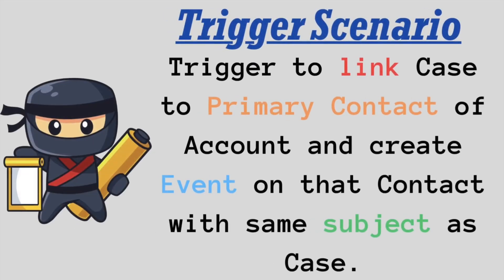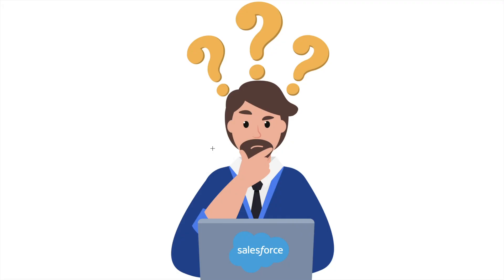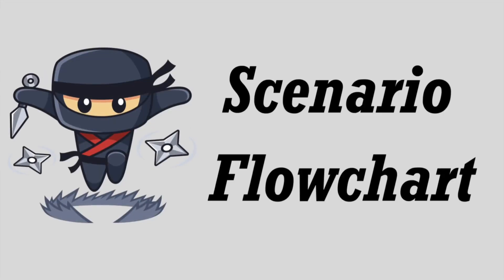Now let's understand what exactly we are going to do today. On insertion of a Case record, we need to link that record to the primary contact of the selected account. And after that, we need to create an event on that contact with the same subject as the case. This must be very confusing, but don't worry, I will try to explain it more clearly using a flowchart.